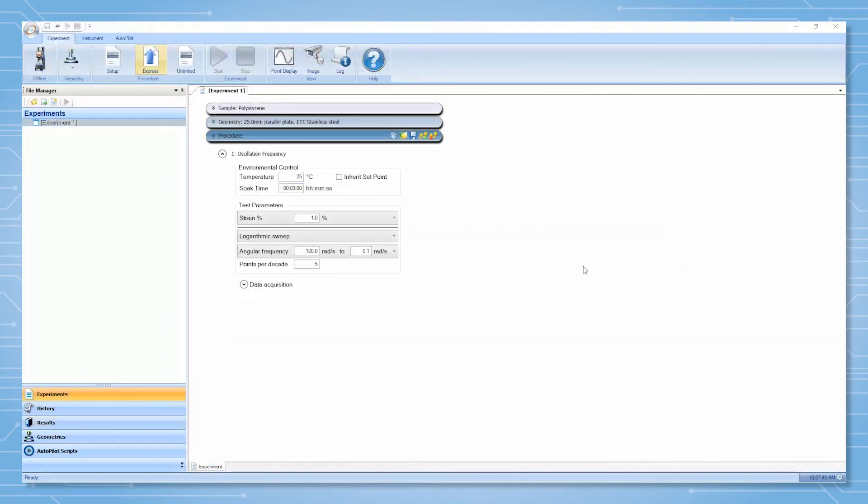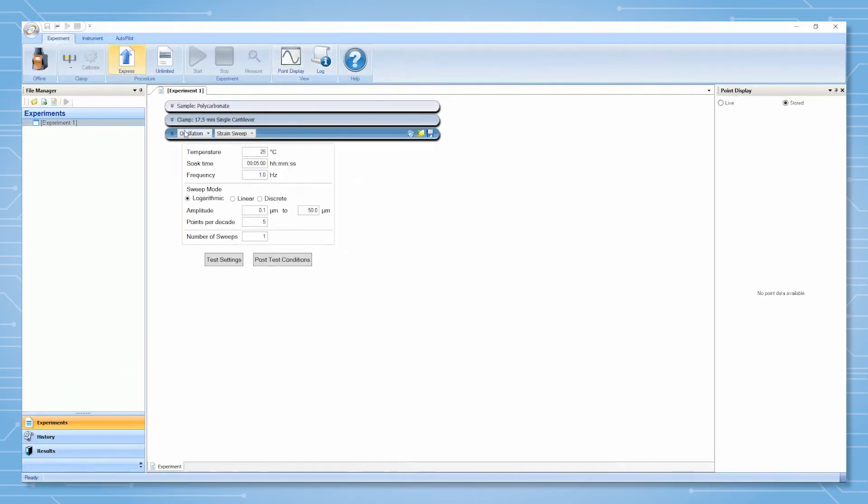The linear viscoelastic region can be determined for a material using an oscillation amplitude sweep on the rheometer or an oscillation strain sweep on the DMA850.